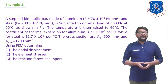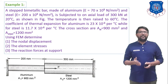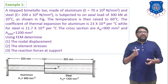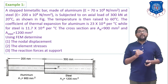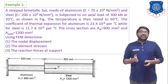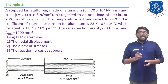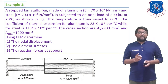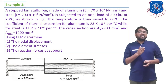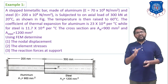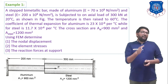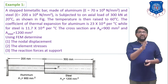The example considers a bimetallic bar made of aluminium with E₁ = 70×10⁹ N/mm² and steel with E₂ = 200×10⁹ N/mm². It is subjected to an axial load of 300 kilo Newton at 20°C. The temperature is then raised to 60°C — so the initial temperature is 20°C and after applying force the temperature increases to 60°C.